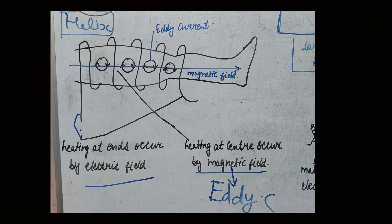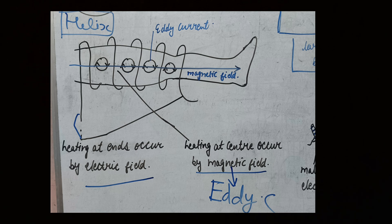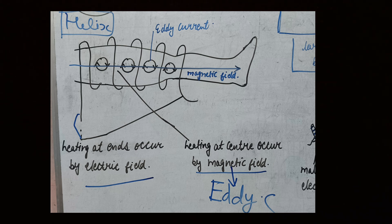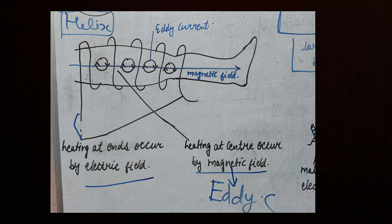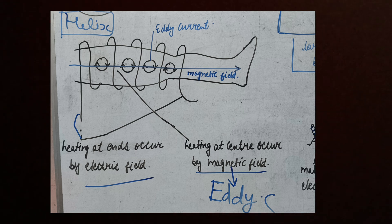Another important point you must be careful about: the distance between each turn of the coil must be the same. Also, the coil is not directly placed over the skin — you need to put a layer of towel so that it becomes two to three centimeters thick. In simple words, there must be a two to three centimeter thick layer of towel between the cable and the skin.